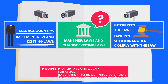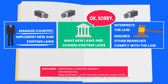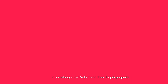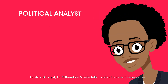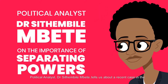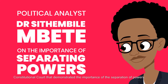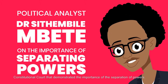When a court declares a law unconstitutional, it isn't interfering with parliament. It is making sure that parliament does its job properly. Political analyst Dr. Sitembe Lemberte tells us about a recent case in the constitutional court that demonstrated the importance of the separation of powers.